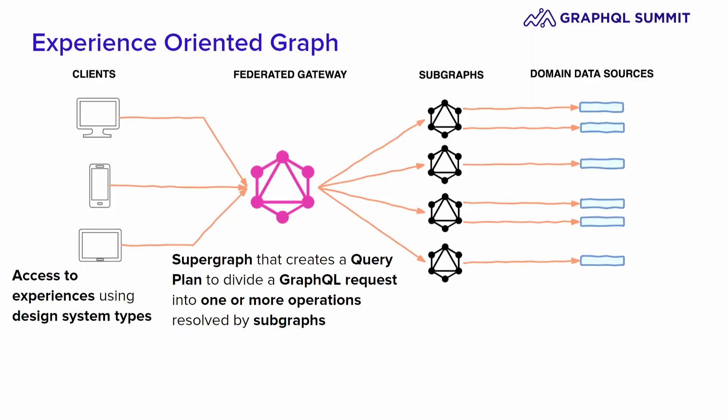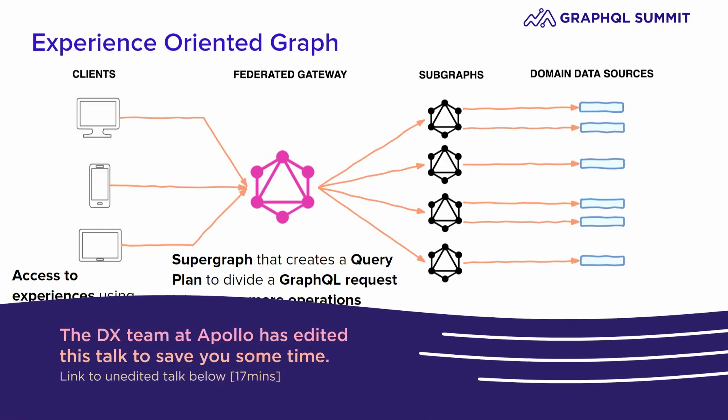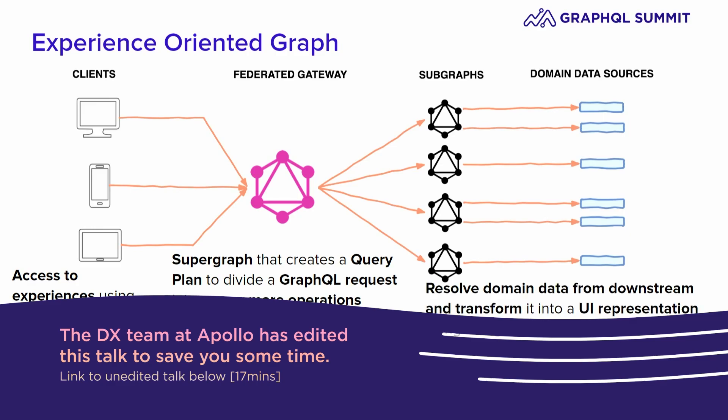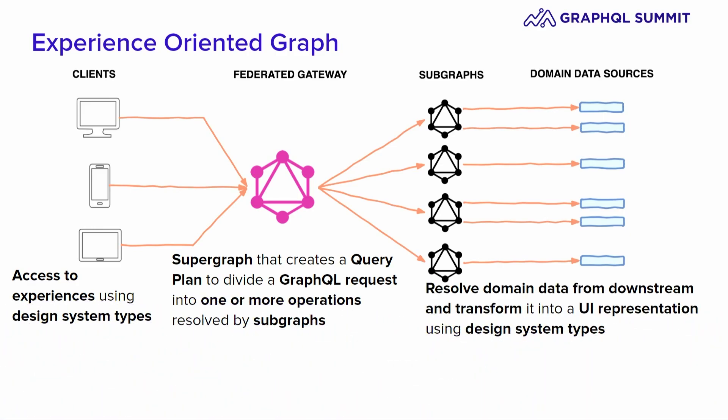The federated gateway is a supergraph that creates a query plan to divide a GraphQL request into one or more operations resolved by subgraphs. At the subgraph layer, things get more interesting. After we resolve domain data from downstream, we transform that data into a UI representation using the design system.